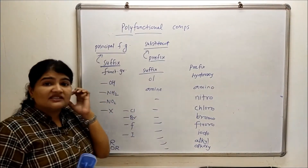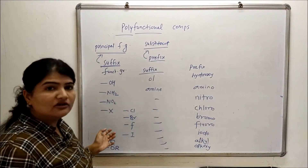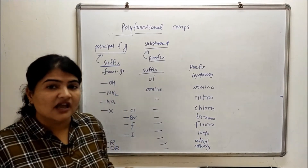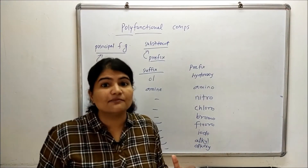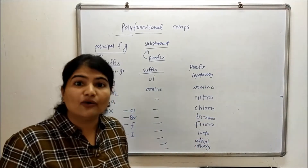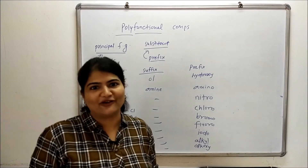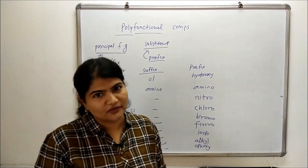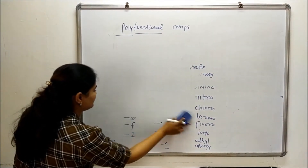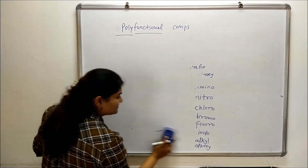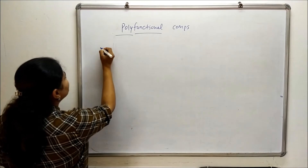Now that the prefix and suffix rules are clear for these functional groups, let's discuss the priority order in which we should use them. What is the basic priority of these functional groups and how do we remember it? Knowing the priority is good, but remembering it is very important. I'm going to write the priority order and tell you a trick to remember it.